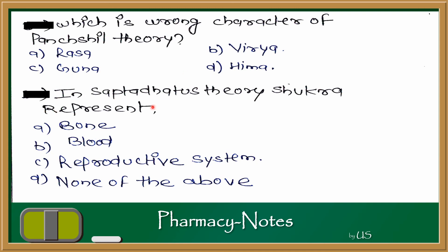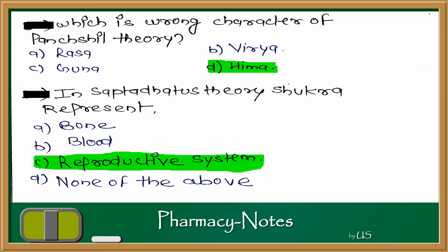In the Sapta-Dhatu theory, Shukra represents what? The options are bone, blood, reproductive system, and none of the above. Shukra in the Sapta-Dhatu theory represents the reproductive system. The answer is C — reproductive system. In summary: Kwath is not part of the Pancha-Guna theory, and the reproductive system is also known as Shukra in the Sapta-Dhatu theory.